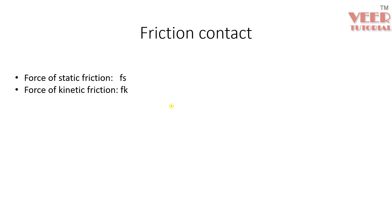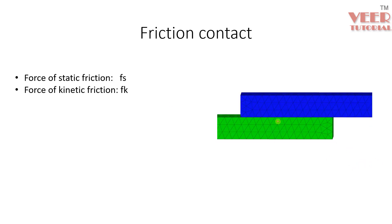First, let's learn about what friction contact is and what the different parameters are to define it. Then we will go to HyperMesh and understand different ways of defining friction between bodies. When you define friction contact, we need to define a friction coefficient, which can be of two types: static friction and kinetic friction. Static friction applies when the body is at rest, and kinetic friction applies when the body is in motion.